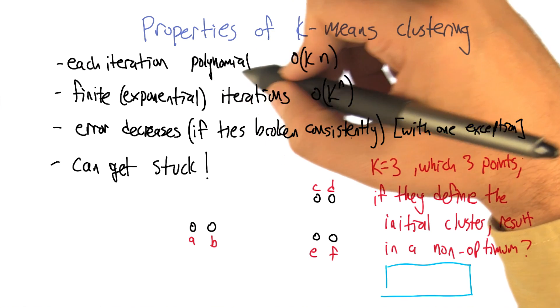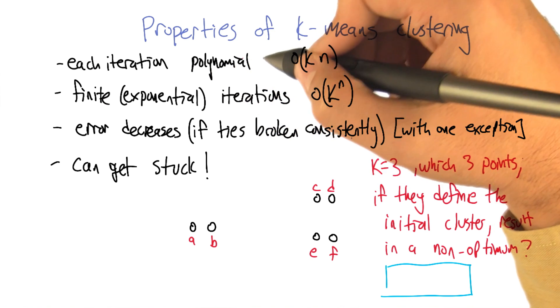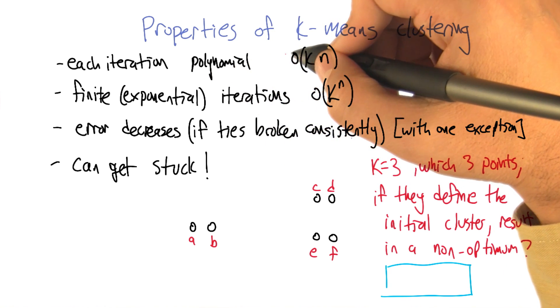One is that each iteration, as we go through this k-means process, each iteration is actually polynomial. It's pretty fast.